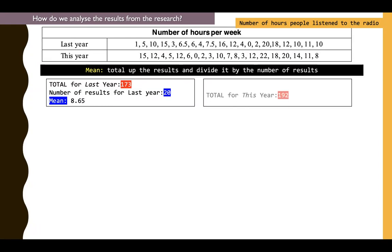And this year, the number of hours when you total up all the information that you have in the this year row, you would see that the number of hours is 192. And the number of results remain the same because there's 20 people who took up the survey. And the mean now has increased to 9.6 hours. That's because they've listened to more radio in this year compared to last year. So you find on average, it has increased in terms of the mean.